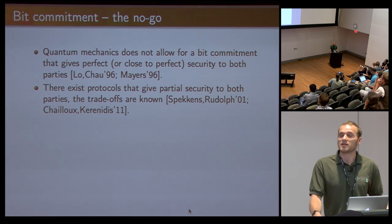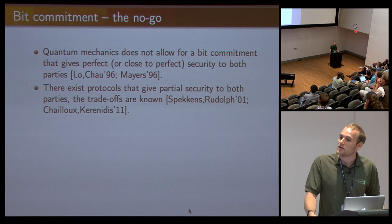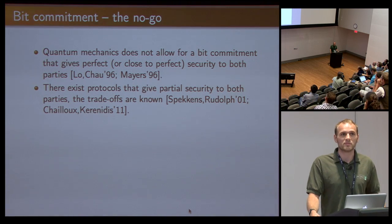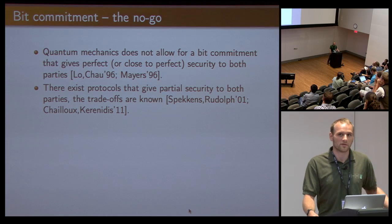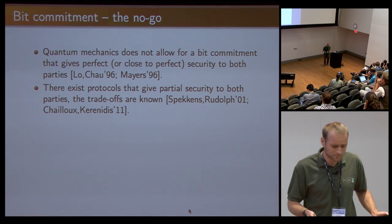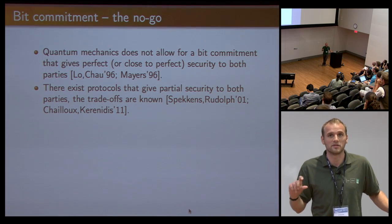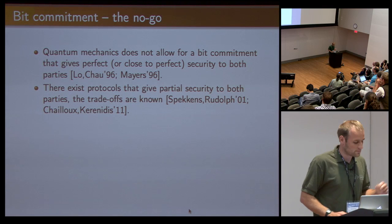It's a great primitive, but it's not possible using quantum mechanics and we know that for quite a while now. There are impossibility proofs, and these impossibility proofs essentially say that a protocol that's perfectly secure or close to perfectly secure for both parties cannot exist. There exist protocols that give partial security to each party, but this is not exactly what we want.